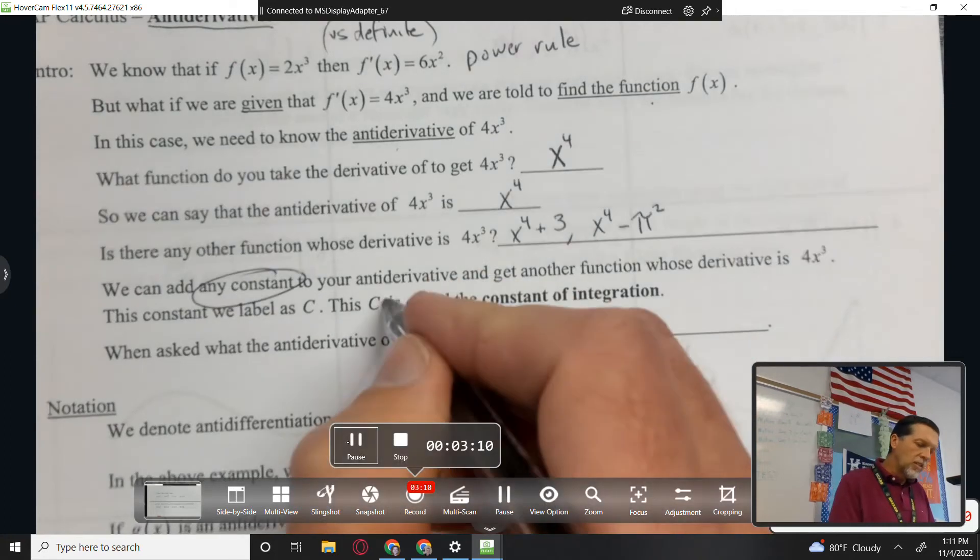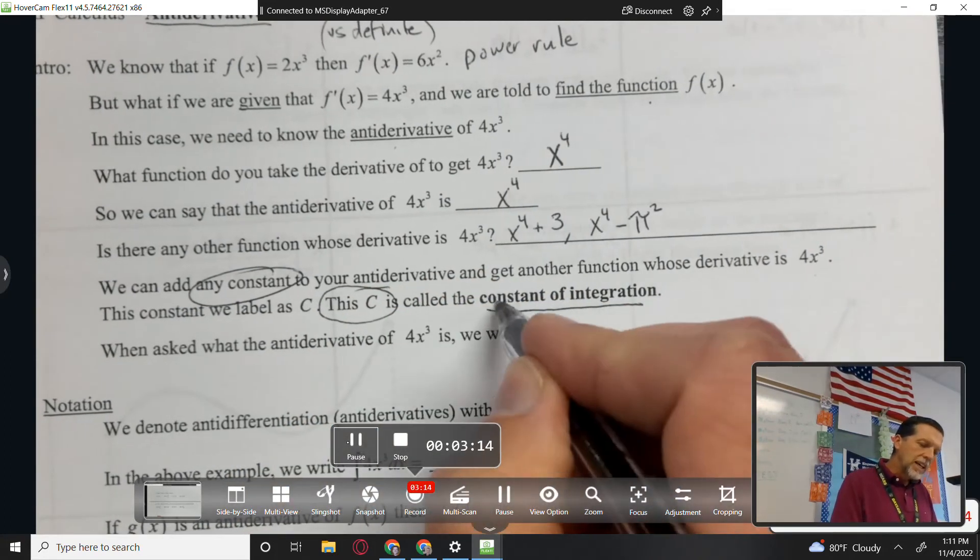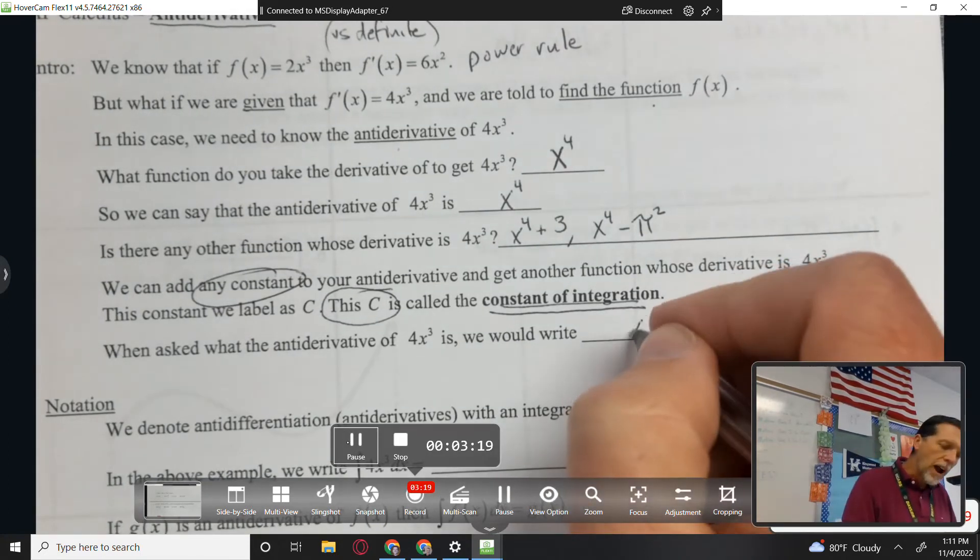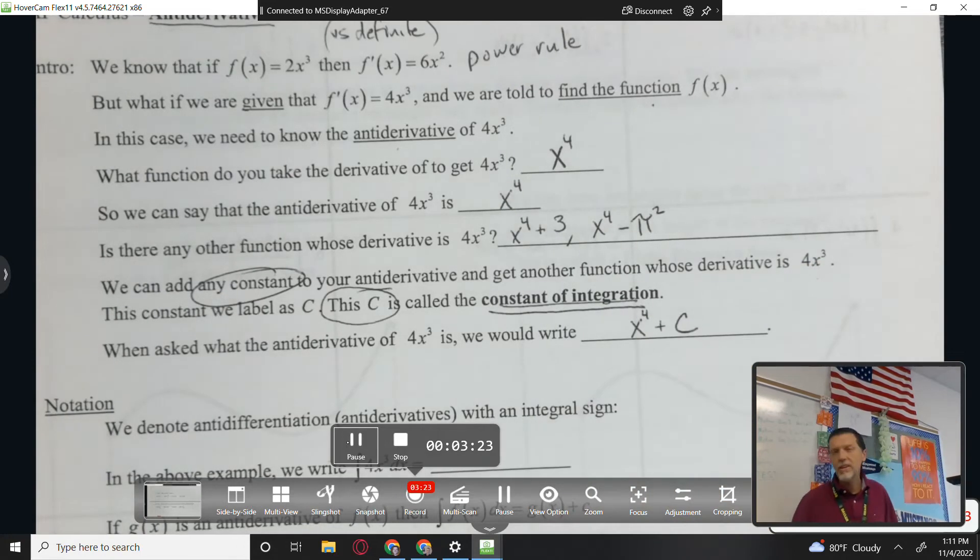We can add any constant to the antiderivative and get another function whose derivative is 4x cubed. This c is hugely important. It's all forgot, the constant of integration. And so from now on when we say what's the antiderivative, you have to include c. Plus c. You've got to include the plus c as part of your answer.